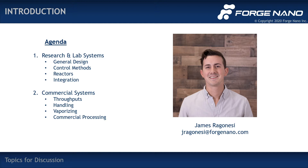To start out for today, I'm going to split the agenda between our lab systems and our commercial systems. For our lab systems, this is what tends to get the bulk of our scientists' time. They use it as a platform system with a lot of different capabilities, and we're frequently adding customizations. When we say lab system, we're referring to a research system that can process materials on the scale of one milliliter to one liter of substrate or powder per day. I'll discuss general design considerations, methods for controlling the system, reactor shapes and sizes, and integration into other lab systems.